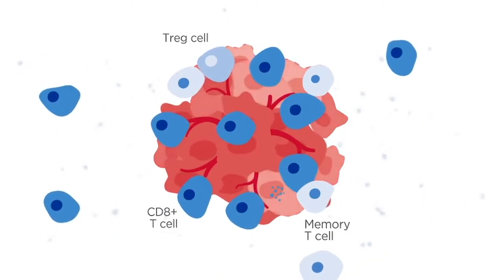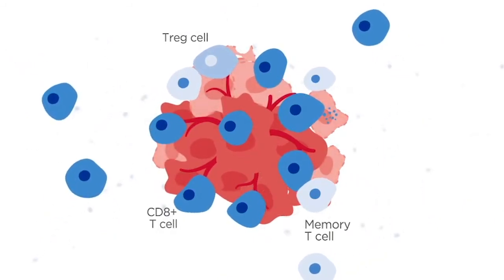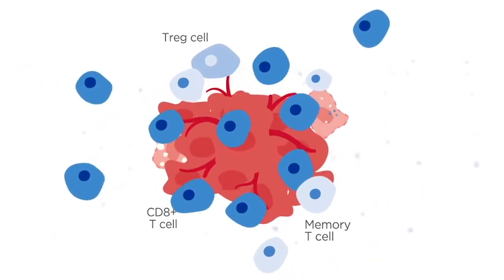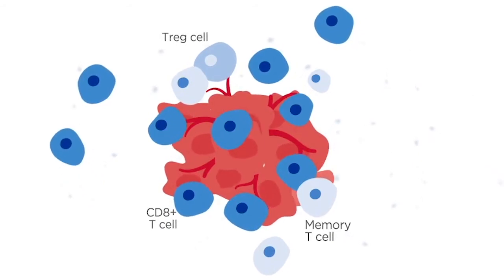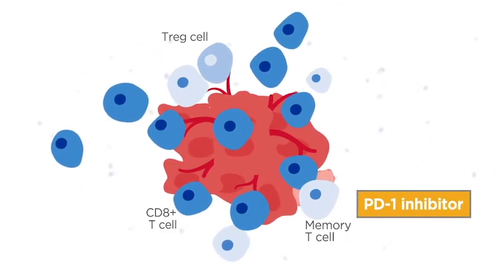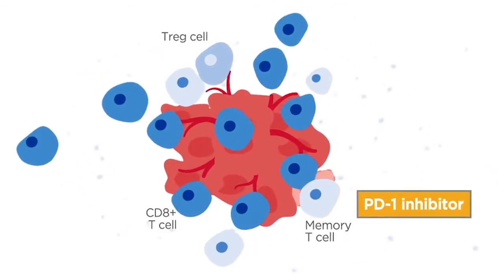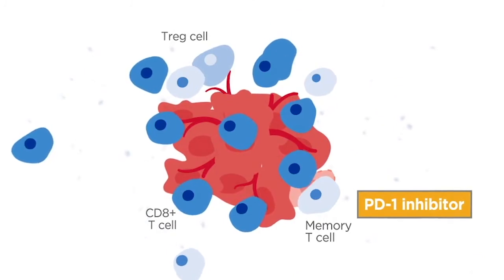Due to its immunomodulating properties, BI907828 could also be an attractive combination partner with immune checkpoint therapies, such as PD-1 inhibitors, to further boost the anti-tumor immune response.